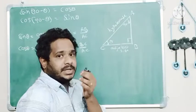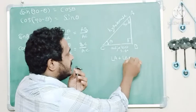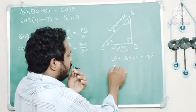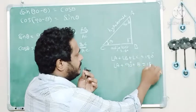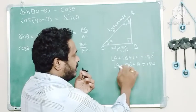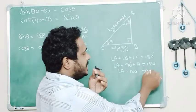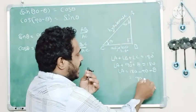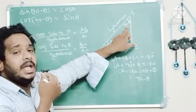Using the angle sum property, angle A plus angle B plus angle C equals 180 degrees. Angle B is 90 degrees and angle C is theta. Transposing to the right-hand side: 180 minus 90 minus theta, so angle A equals 90 minus theta.